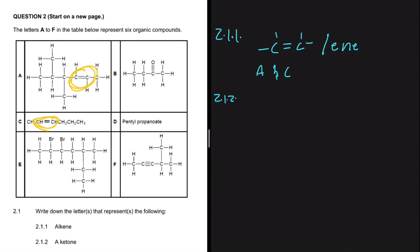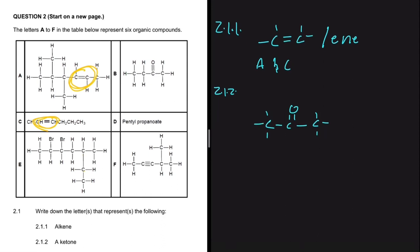Now let's go to 2.1.2: which letter represents a ketone? For a ketone, we need a carbon bonded to an oxygen and bonded to two other carbons. If we see that, or a name ending with 'one', we know we have a ketone.